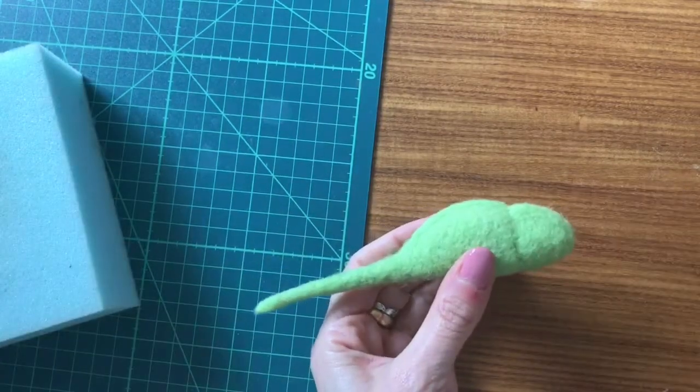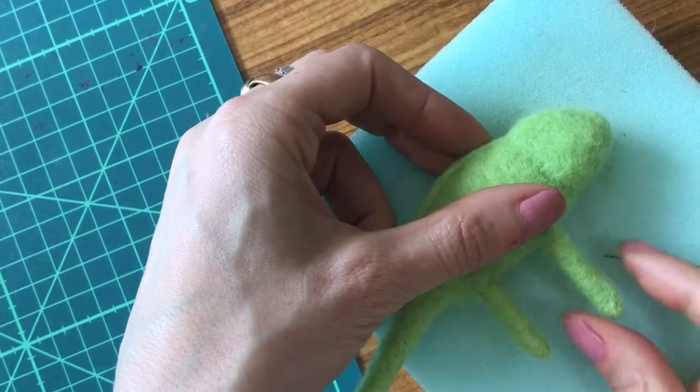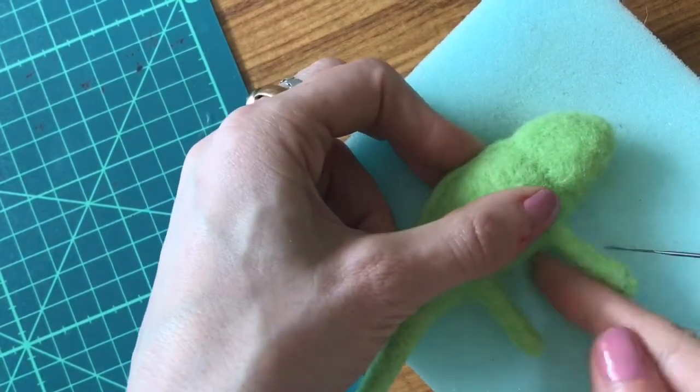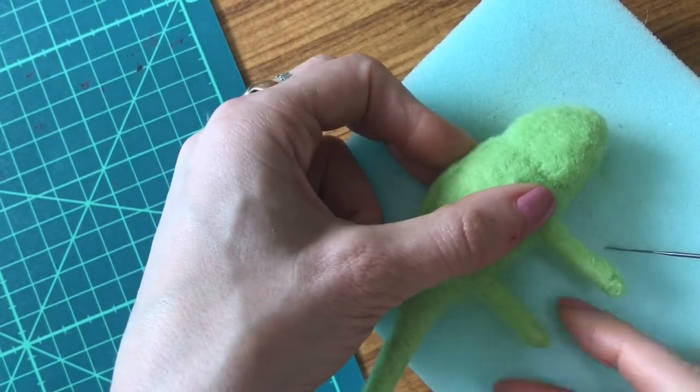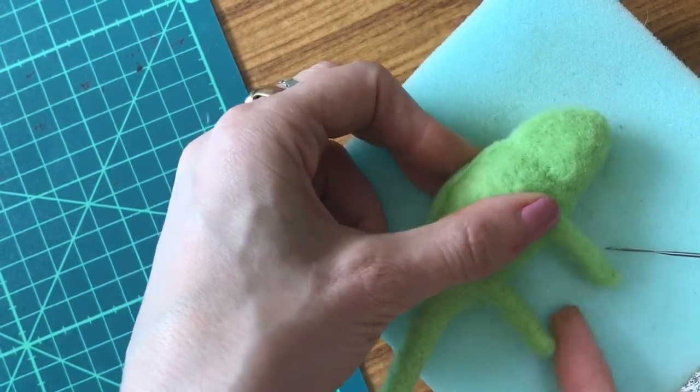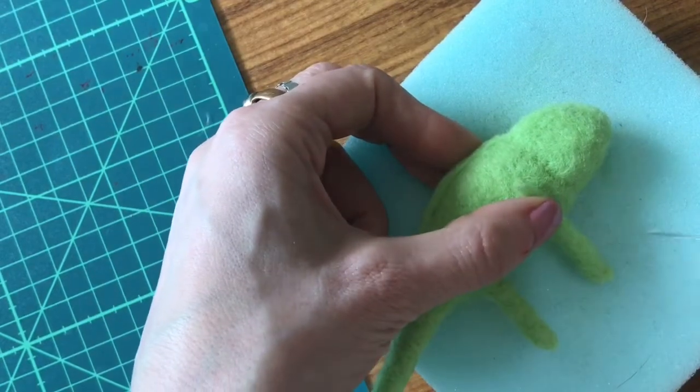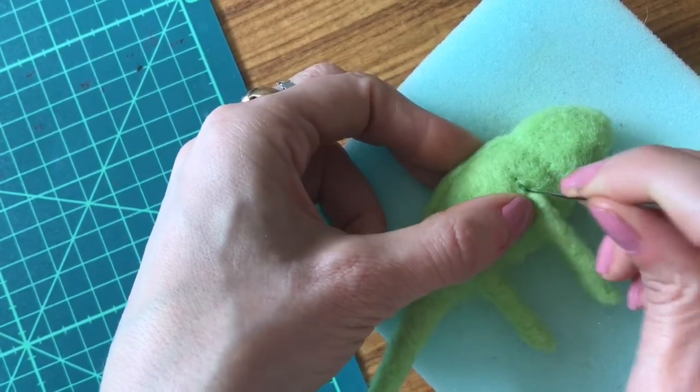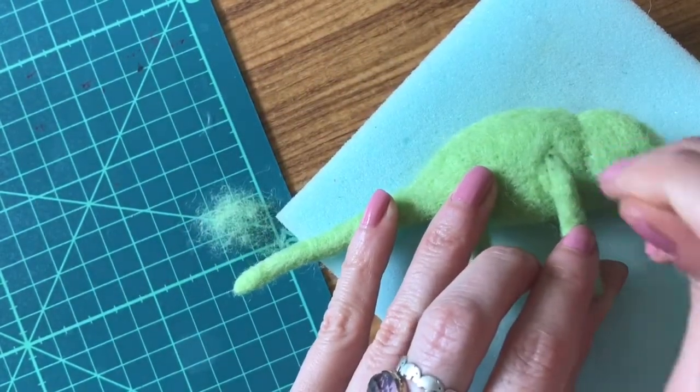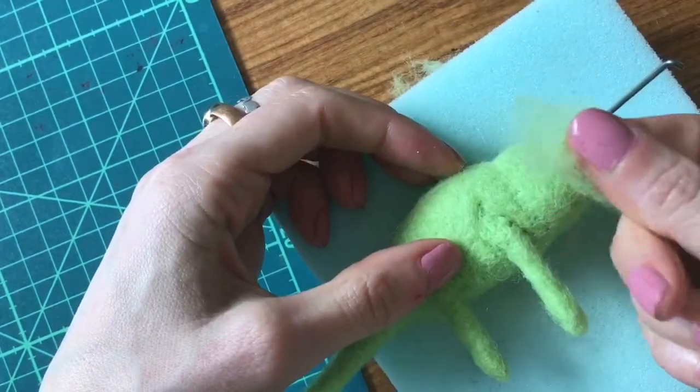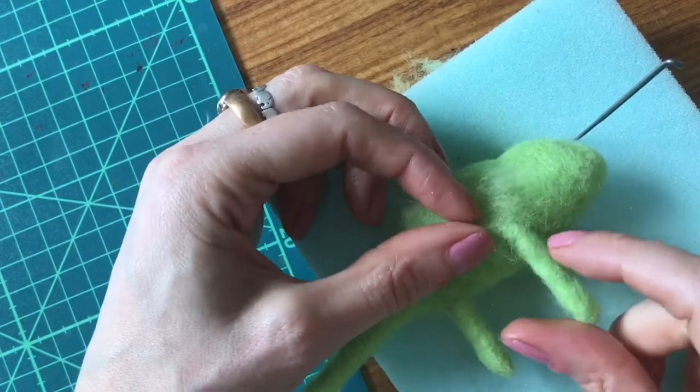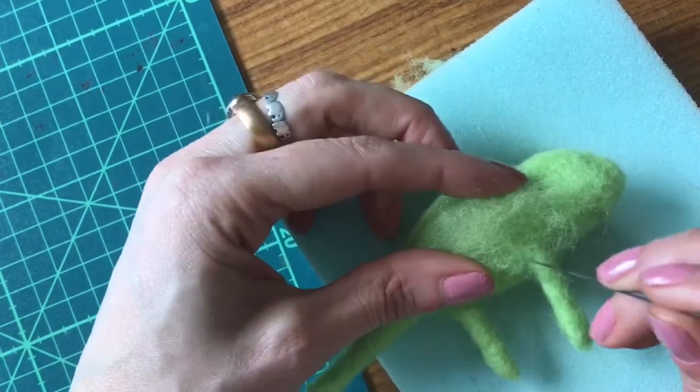Now we're going to attach the legs. You want to position them onto the side of the body, going up about a centimeter from the bottom. I've attached this one leg already. When you attach the second leg, just make sure that they're lined up so that they're even. Then needle felt straight into the body through the side. Take little bits of the green carded wool and needle felt that neatly over the join. That will help attach the leg more securely and also cover the joins.